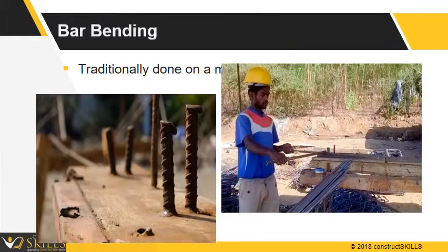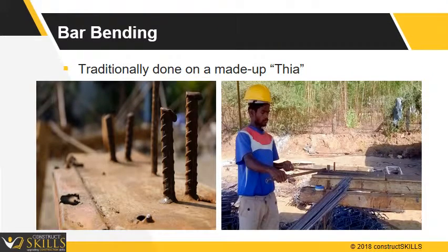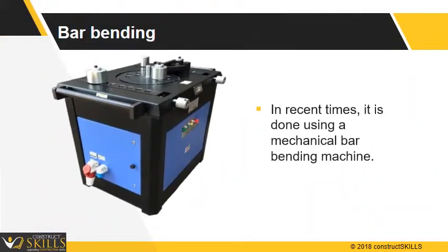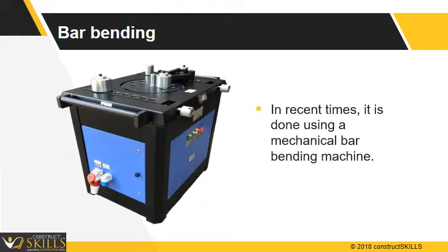Bar bending is traditionally done on a tier. Fitters use different tools as per diameter of bars. In recent times, it is done using a mechanical bar bending machine.